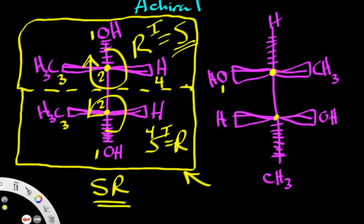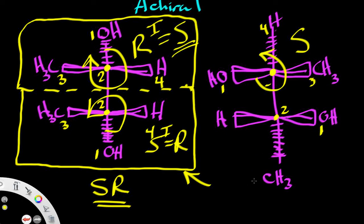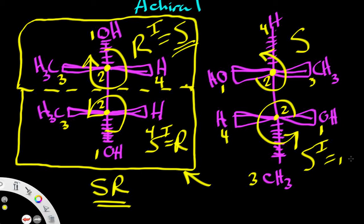For the first carbon: priorities one, two, three, and four — moving in this direction we have an S configuration, and we do not need to invert because our lowest priority group is pointing away from us. For the second carbon: priorities one, two, three, and four — moving in this direction we have another S configuration. However, our lowest priority group is pointing toward us rather than away, so we invert and get an R configuration. So this molecule also has an S,R configuration.